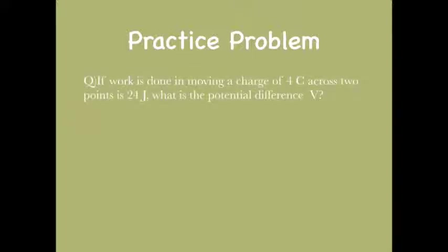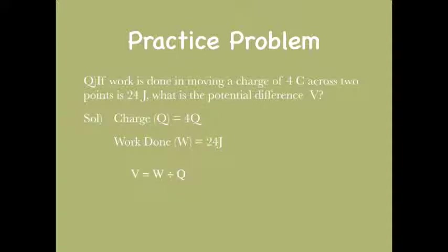Problem 2: Find the potential difference given a charge of 4 coulombs and work done of 24 joules. Using the formula V equals W divided by Q, and substituting the values of W and Q, V equals 6 volts. So the potential difference required is 6 volts.